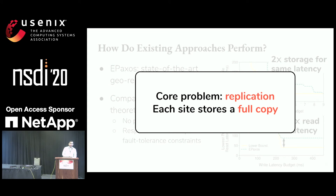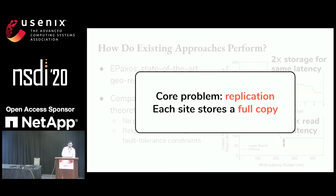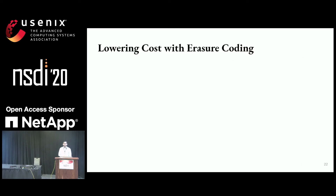The fundamental problem with ePaxos is that it relies on replication — whenever we want to introduce an additional data site, we have to incur the cost of storing another full copy of the data. We know there's something called erasure coding, which has been used in many settings to lower cost. Can we use it here?